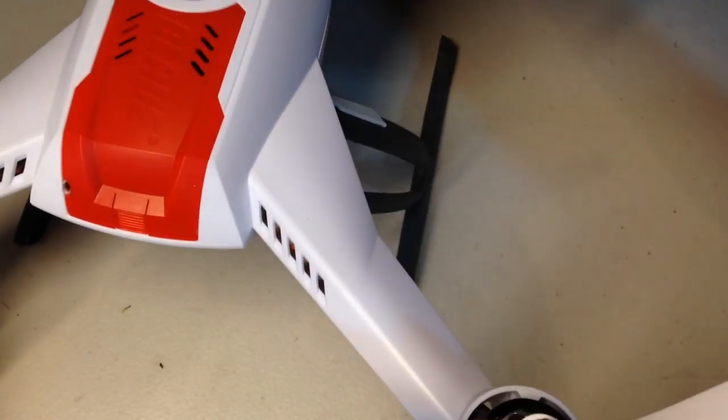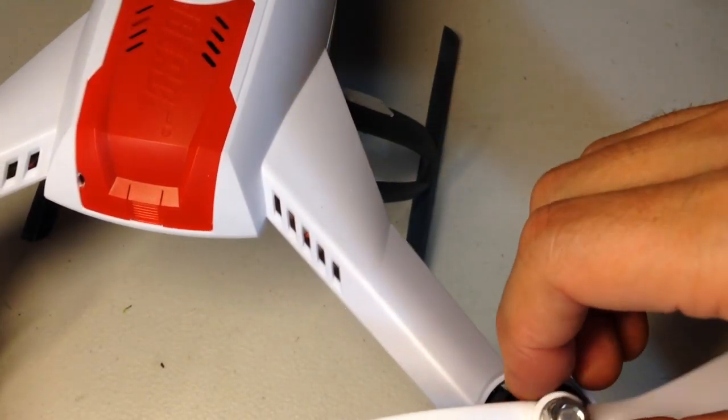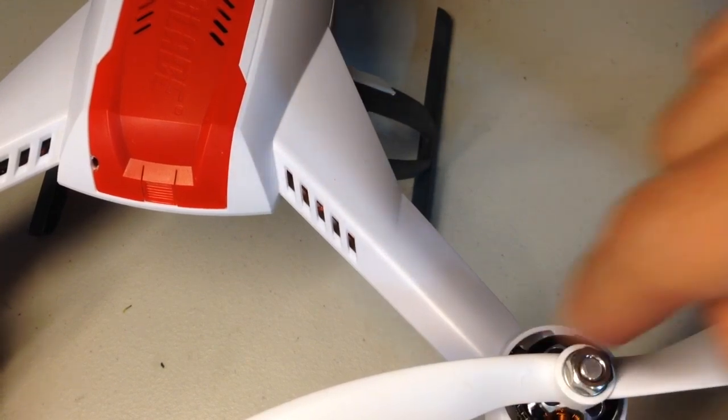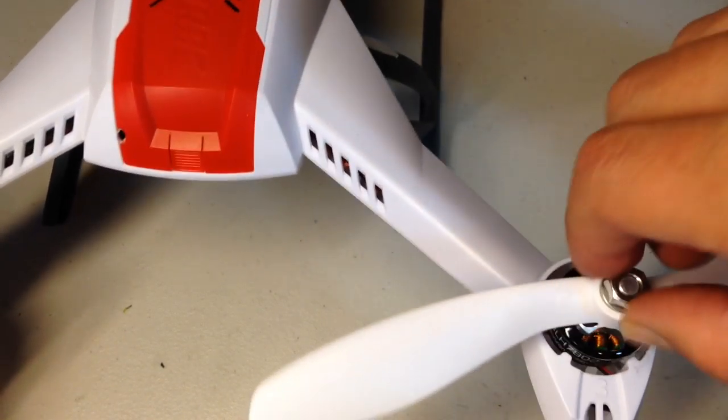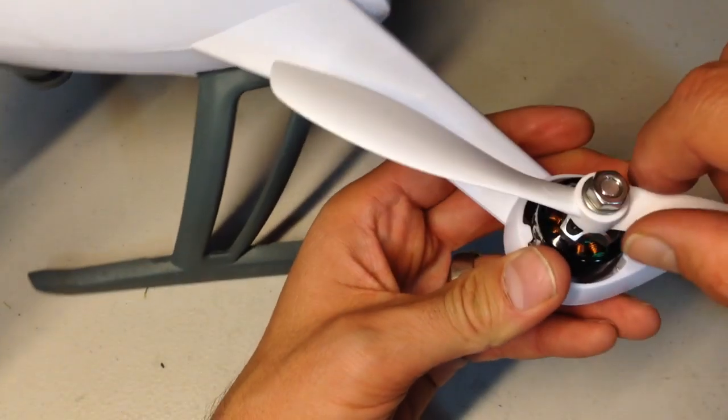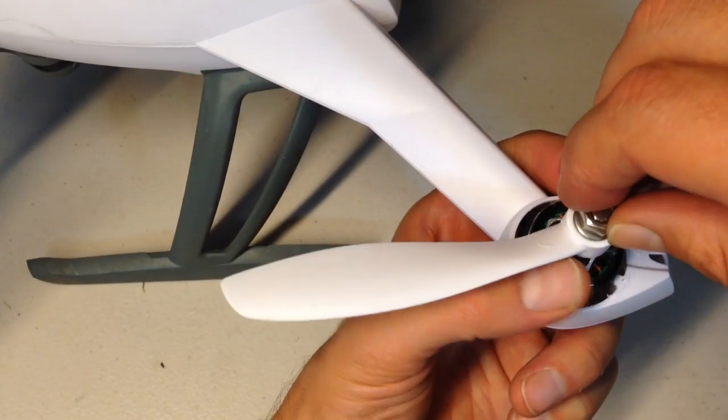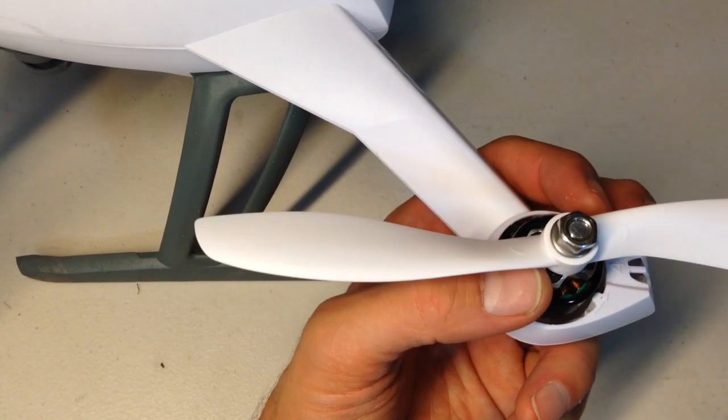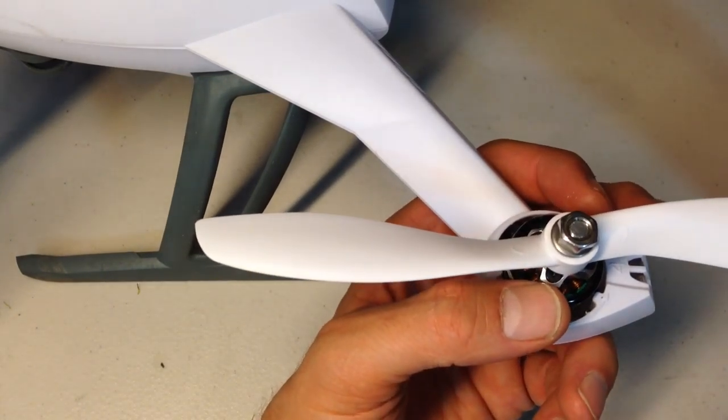When you get to pods one and three, it's left-hand threads, which means you have to do the unscrewing motion to actually screw it down in. That way, the direction that they are turning is always in a tightening fashion. And in case it's going to encourage the screw to tighten rather than to loosen.